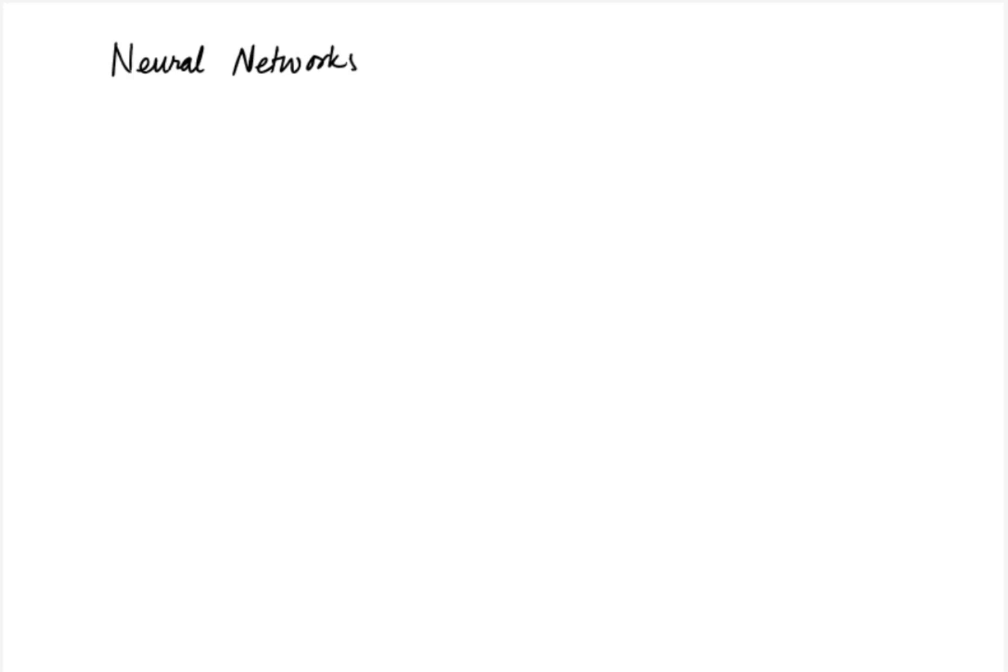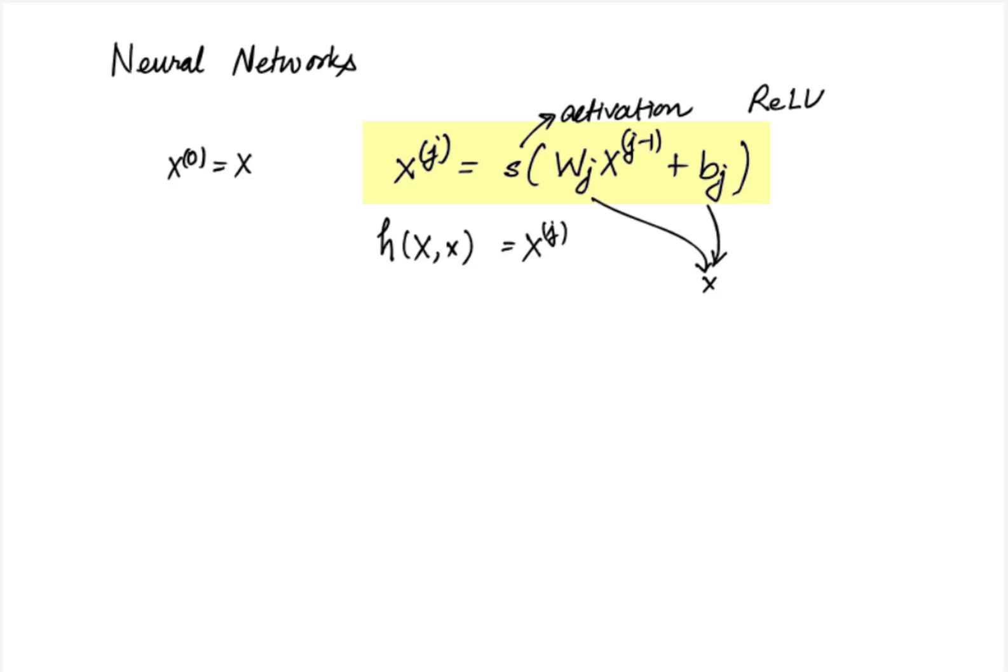A widely used parameterization of h is that in the neural networks where we make use of a composite form. Suppose we are given the data x and y, the neural networks make use of a composite loss function which is evaluated as follows. So starting at x zero which is simply the data x, there are many layers in the neural network and each layer evaluates x of j which is given by s of w j into x of j minus one plus b j for all j from one to capital J. And the final h of x comma x is given by the x of j which is evaluated at the last layer.